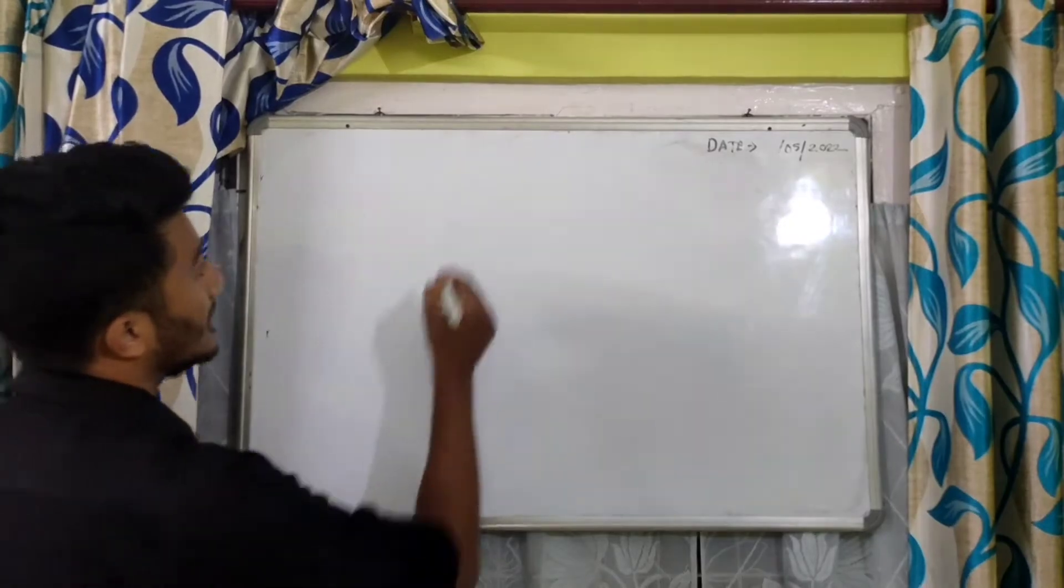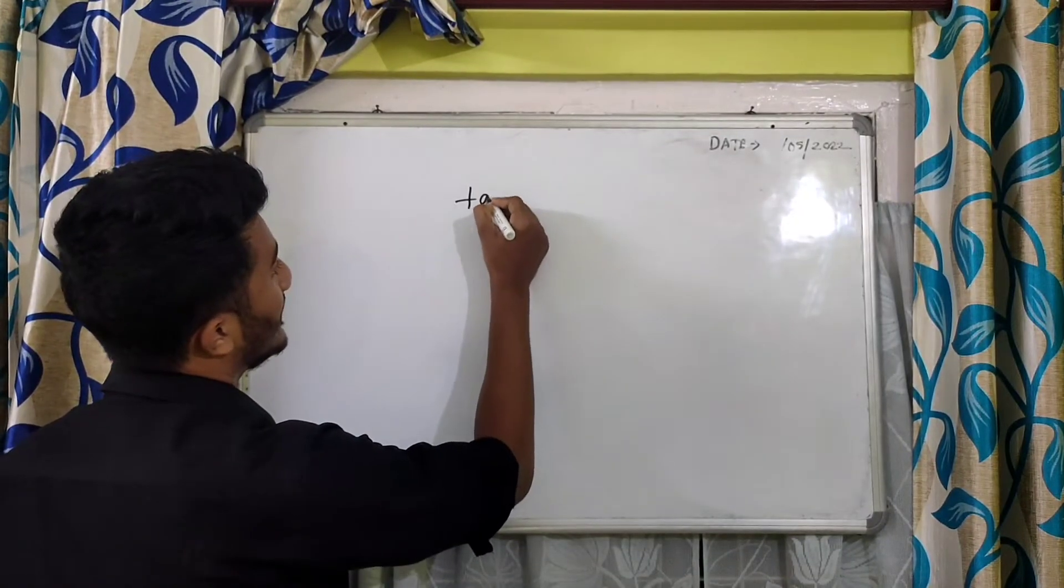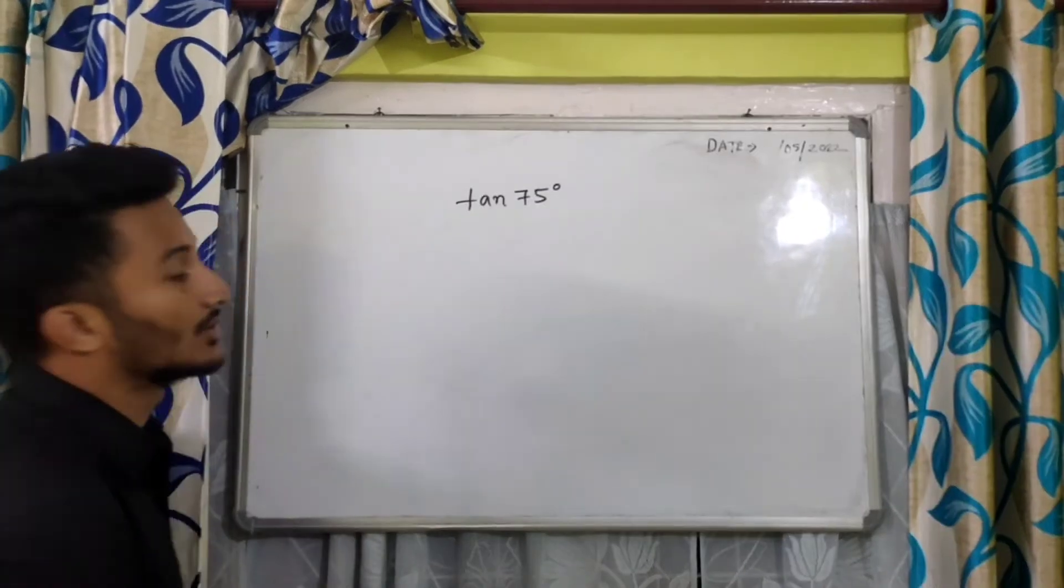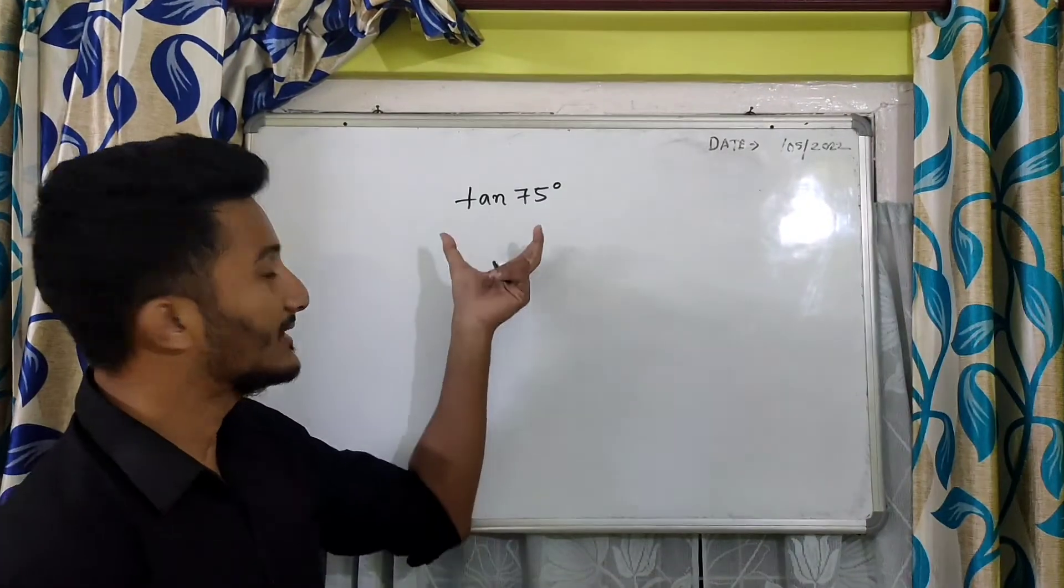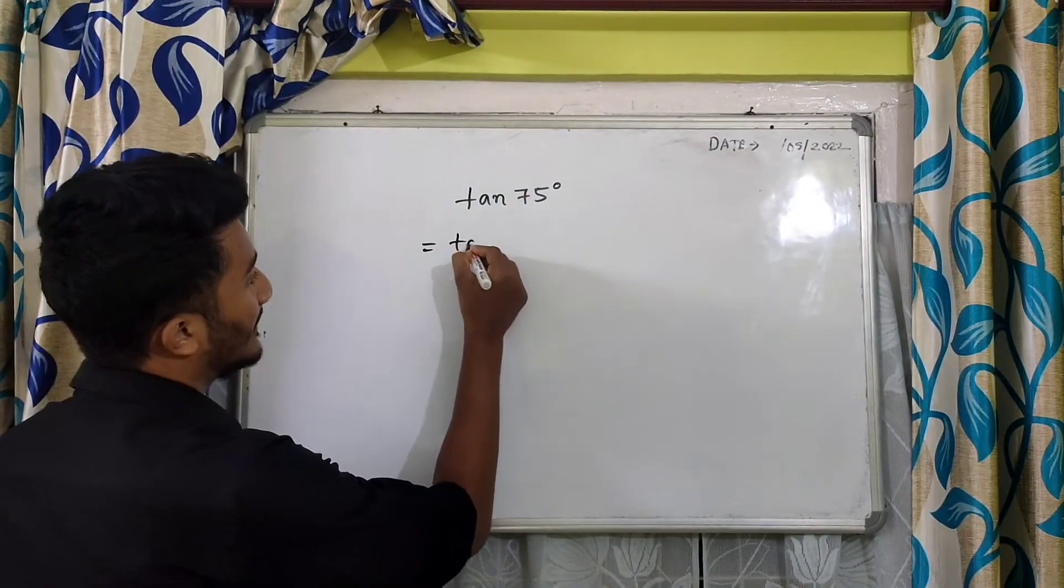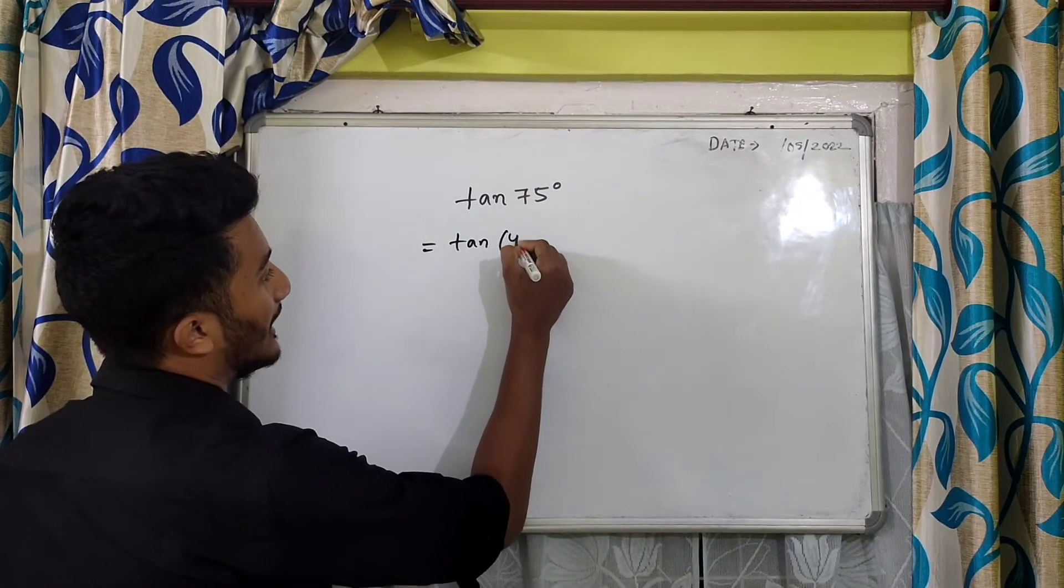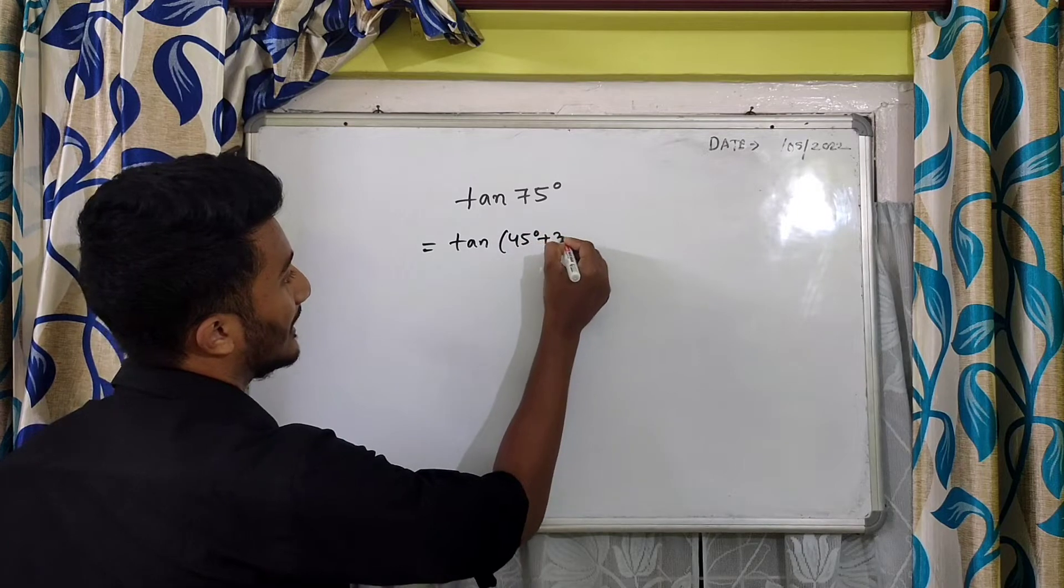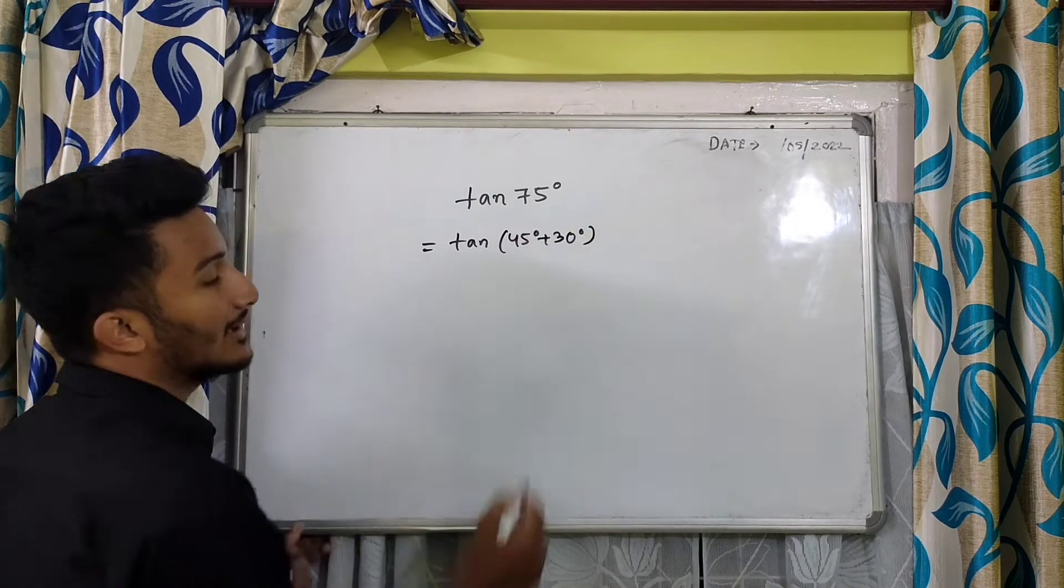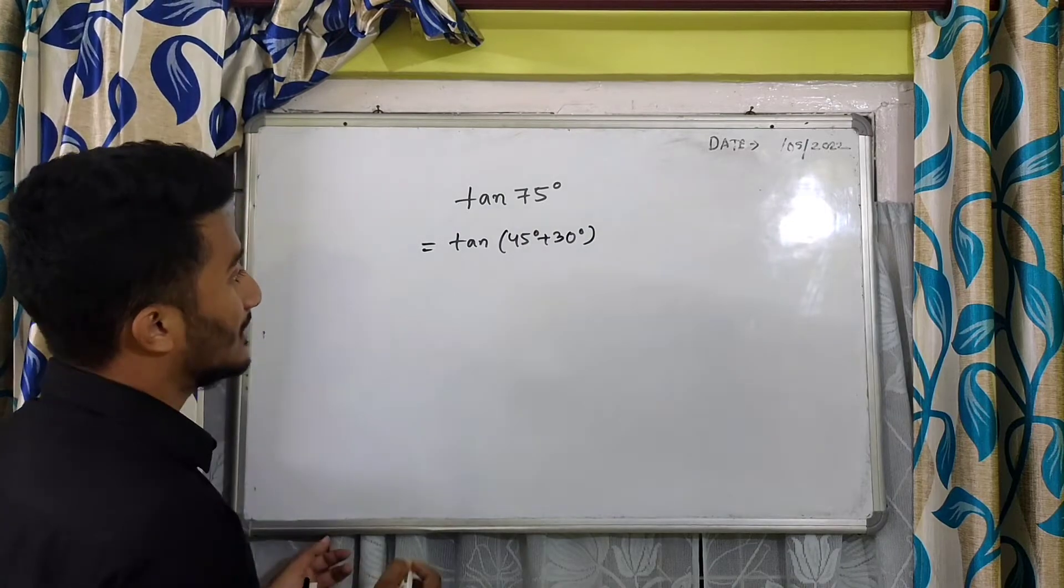Hello everyone, today I'm going to teach you how to find out the value of tan 75 degrees. If we have to find out the value of tan 75 degrees, what can we do to this trigonometric ratio? First of all, we can break down 1075 degrees into 45 degrees plus 30 degrees, because if we add these two, we'll be getting 75 degrees.